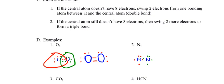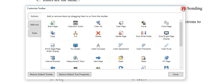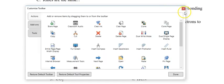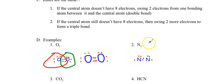Each nitrogen has only six electrons — not eight as needed. So I swing two electrons from one side into the middle: that gives seven around each nitrogen. Still not enough. I need to swing two more electrons into the middle as well.